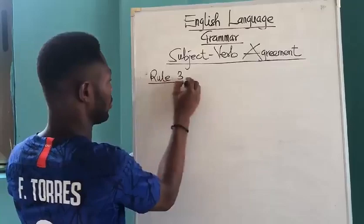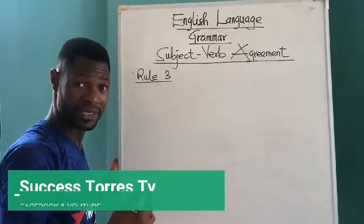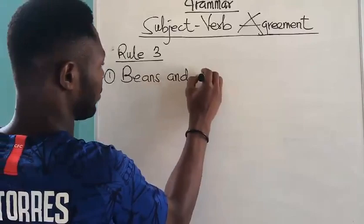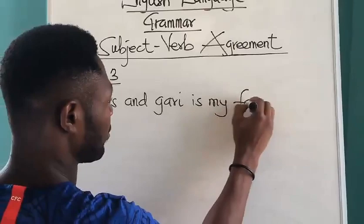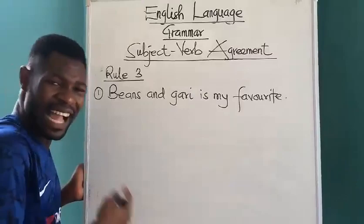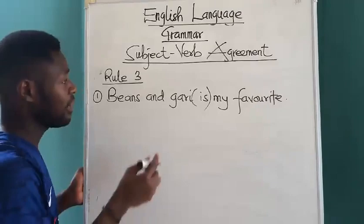Let's look at Rule 3. A compound subject that acts as a singular subject takes a singular verb, even when it is joined by 'and'. So we have a compound subject that acts like a singular subject — it will take a singular verb.